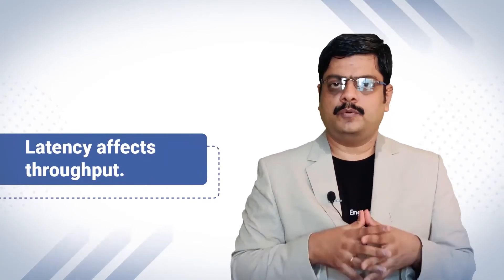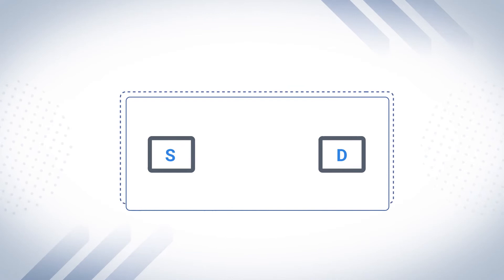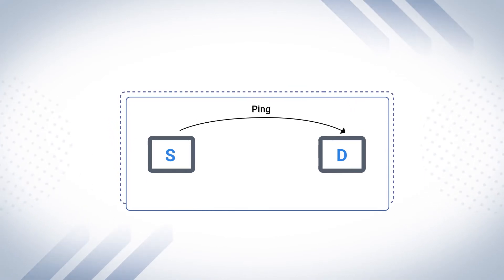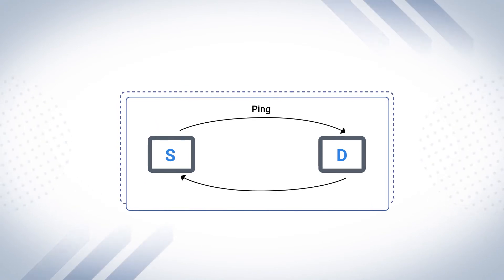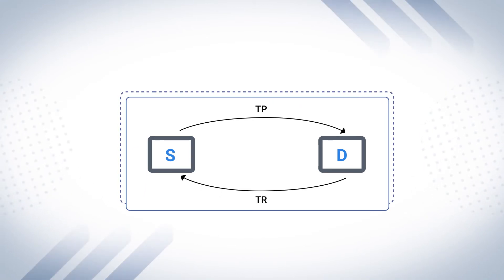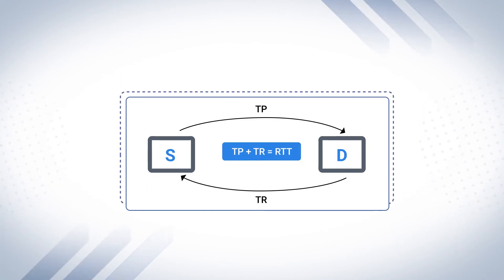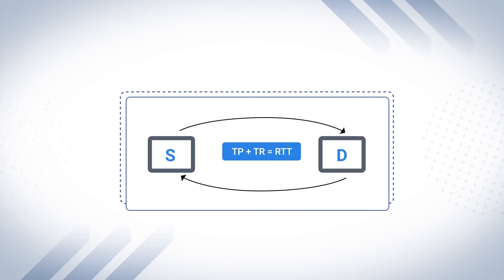Latency is one of the factors that affects throughput due to high congestion in the link. Consider two nodes — source and destination. The source node sends a ping packet to the destination, and the destination sends another packet back to the source — that's called round-trip time. The time taken from source to reach destination is TP, and from destination back to source is TR. To calculate RTT (round-trip time), we simply add TP + TR. This reflects the time taken from source to destination and back, and is called response time. With this time factor, we can calculate the latency of a particular network.